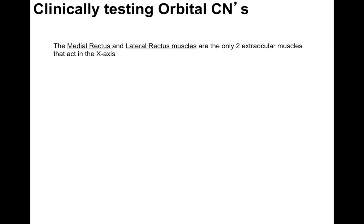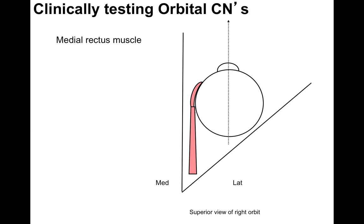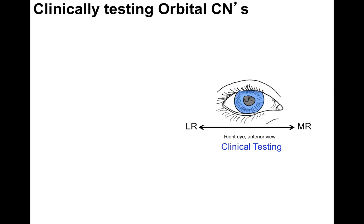The medial rectus and lateral rectus muscles are the only two extraocular muscles that act in the x-axis. To clinically test these two muscles and their associated cranial nerves, we look at their actions. The lateral rectus abducts the eye, and the medial rectus adducts the eye. So to clinically test them, have the patient look towards their nose or towards the wall. The medial rectus will test cranial nerve 3, and the lateral rectus will test the abducens nerve, cranial nerve 6.